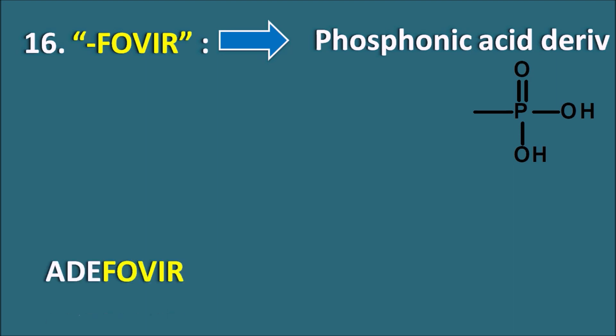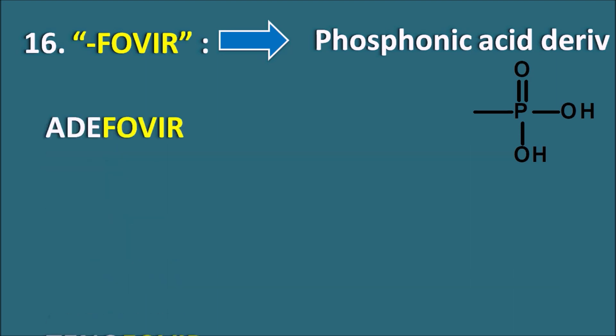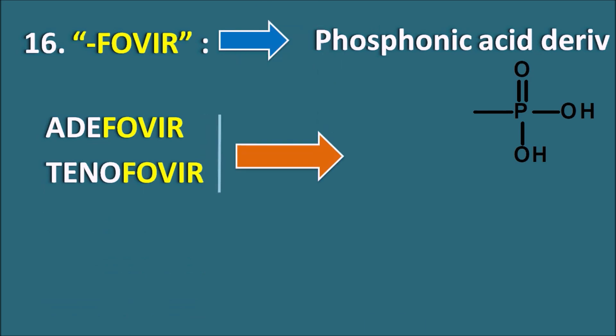We have a few drugs like Adefovir and Tenofovir. These two drugs are acting like NRTIs — Nucleoside Reverse Transcriptase Inhibitors. Thereby they can inhibit the conversion of the viral RNA to the viral DNA.